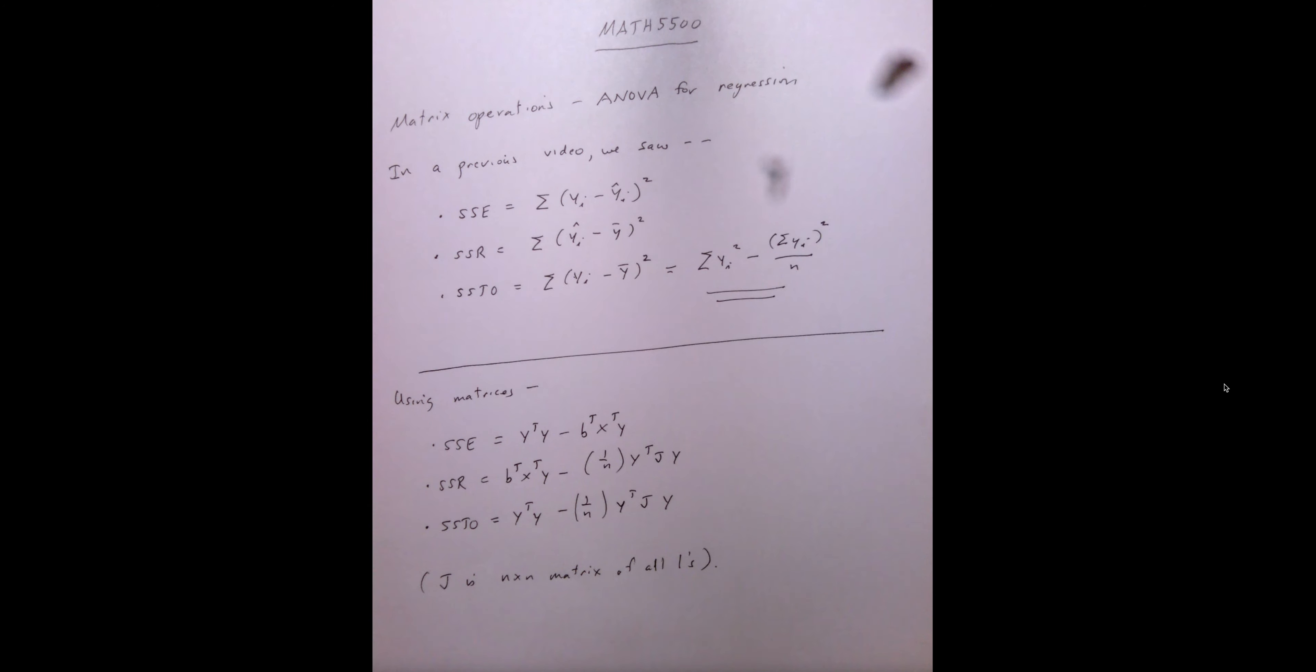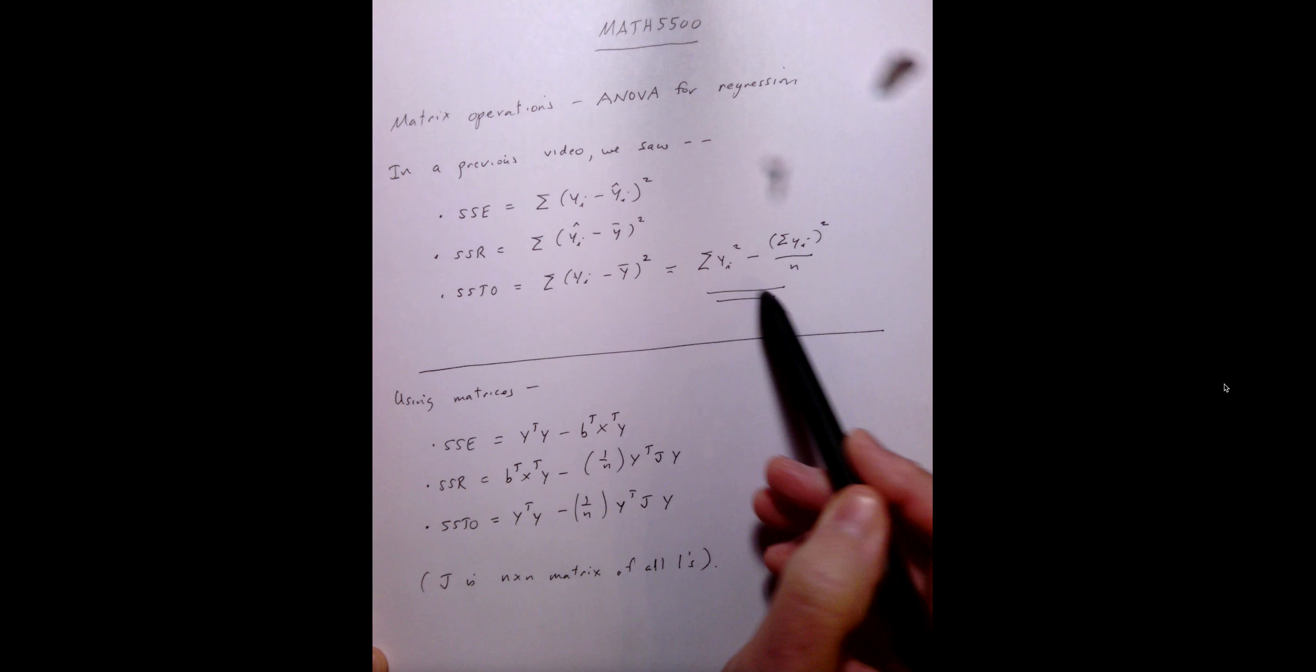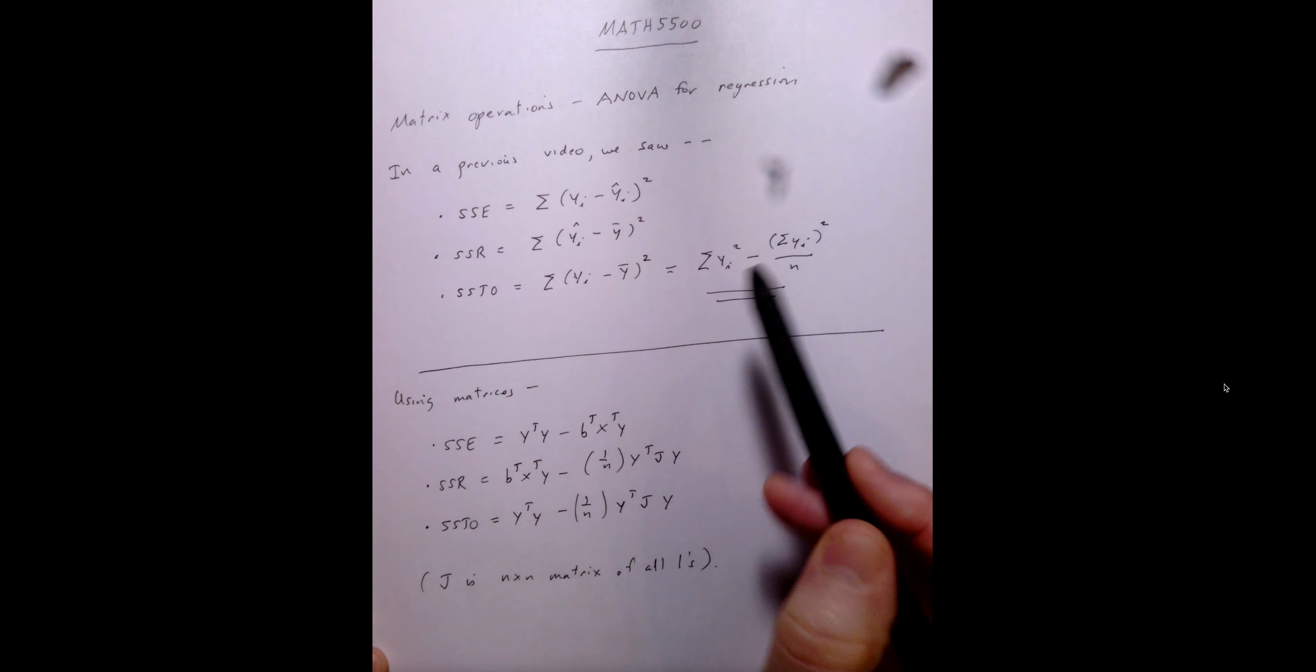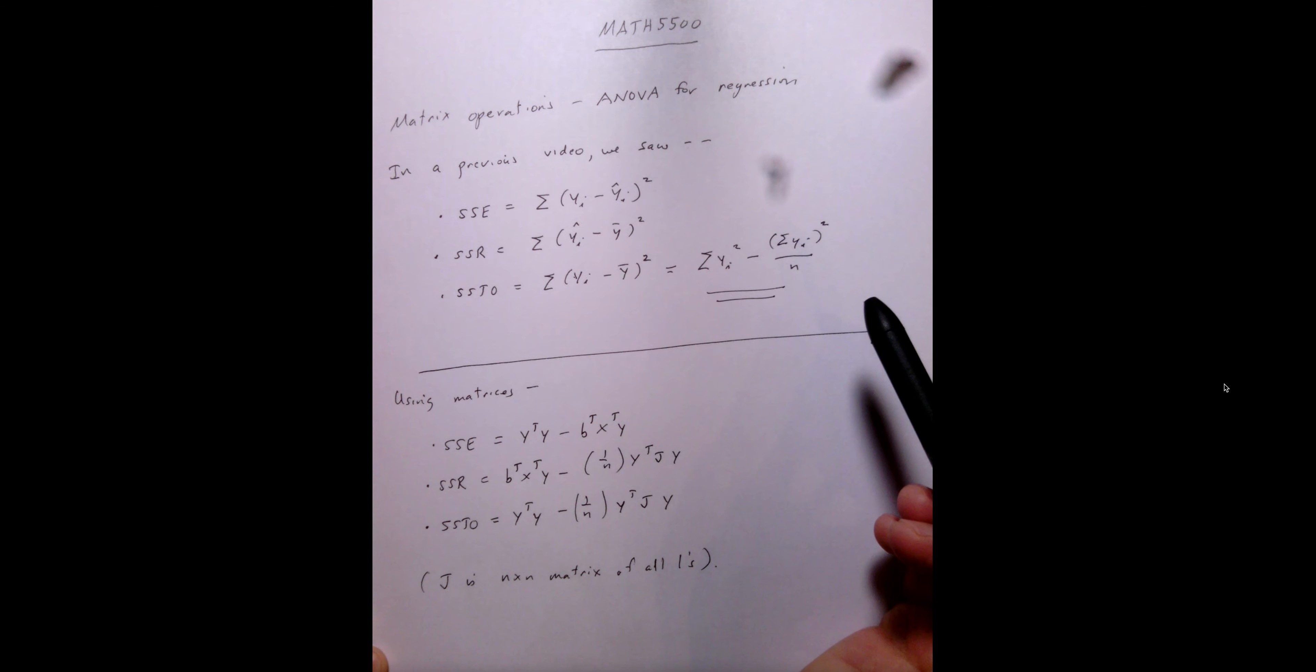So if we just look at the Y values, the predicted Ys and observed Ys and the mean Y, we can manipulate the three sources of variation as we saw in a previous video. Now, I'm throwing another form at you for the sum of squares total. These two are equivalent, and this form is just going to be easier for me to work with when I verify some of this stuff down here.